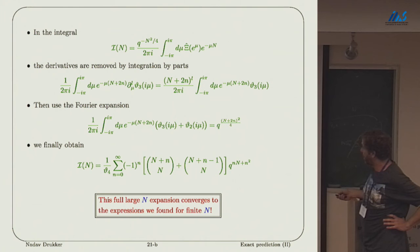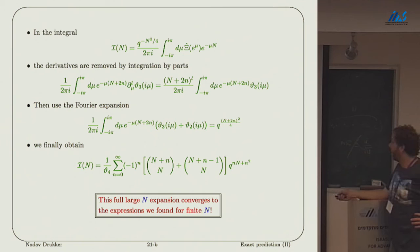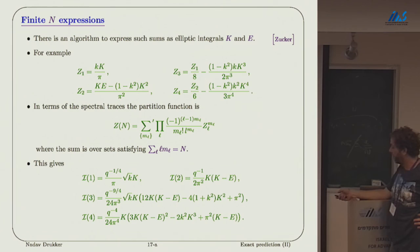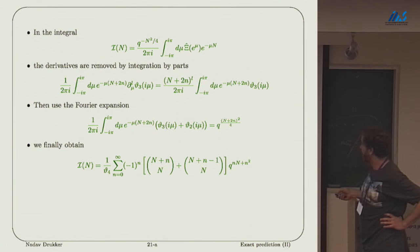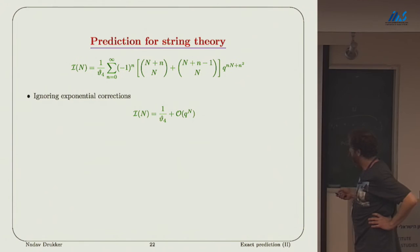We can take the large N limit, and then we just need the case of little n equals 0, where this term vanishes, and we just get 1 over theta 4. This is the large N expansion. All the terms are non-perturbative. There are no 1 over N corrections. All are q to the N, and q is less than 1, so it's e to the minus N corrections. This series converges to these expressions I had before. Even for N equals 1 and 2, this gives the exact answer.